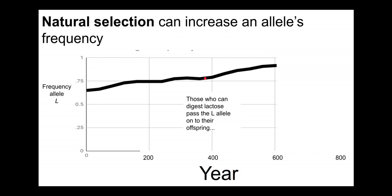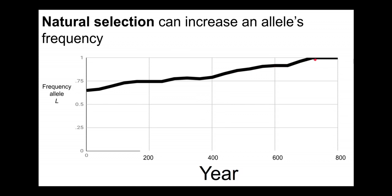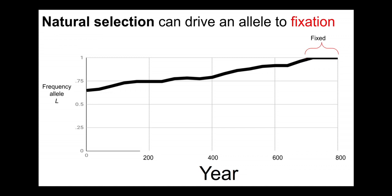So the frequency of the allele is going to increase over time, and that process can potentially continue until the allele increases to a very high frequency or even reaches fixation. When an allele has a frequency of one — 100% of the individuals have that allele for that gene — we say it is fixed. Natural selection can drive an allele to fixation, though it doesn't always do so.